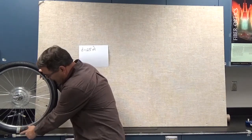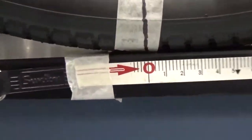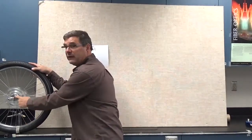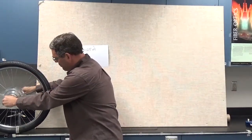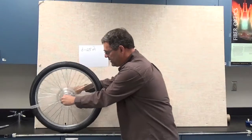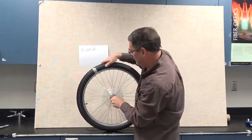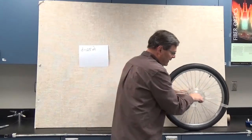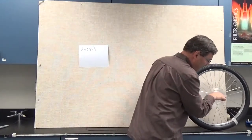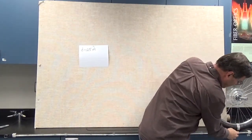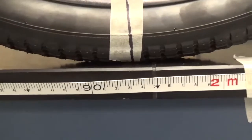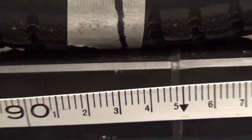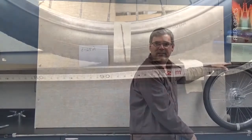I've lined up my mark at the zero spot, which is also in line with the center of mass of the wheel. Now I'm going to roll it through one rotation, following this mark through one complete rotation. When it reaches the end, I read the tape measure and it came to the 193 centimeter mark.